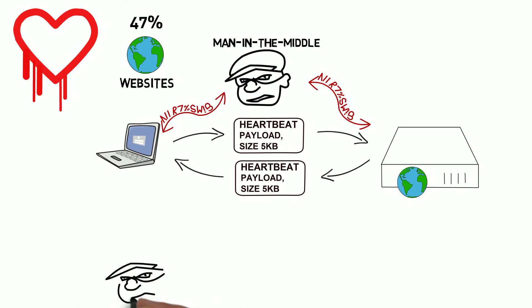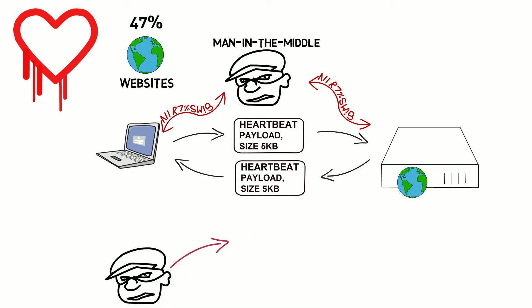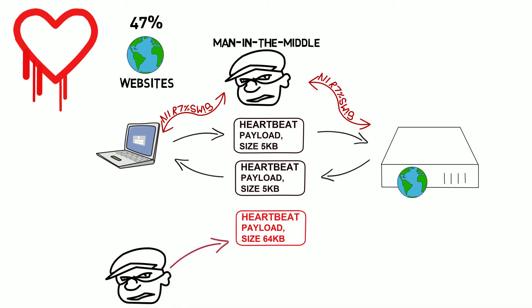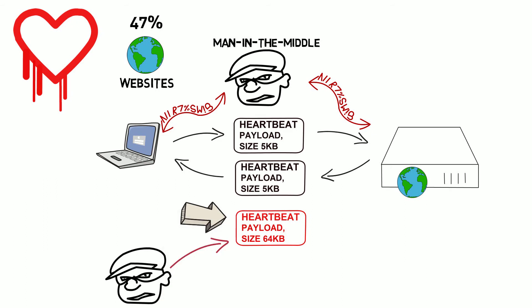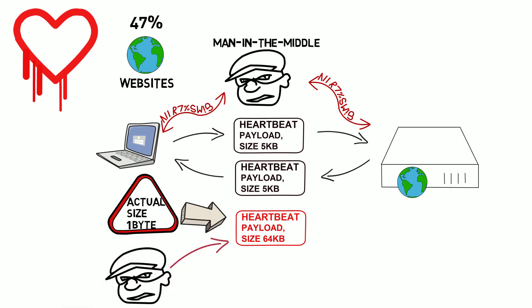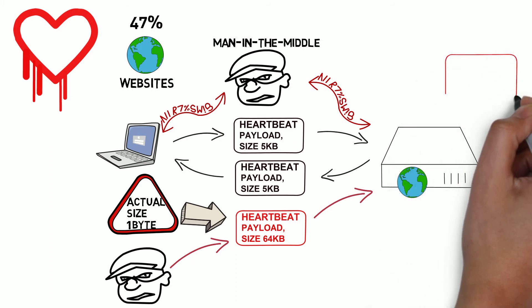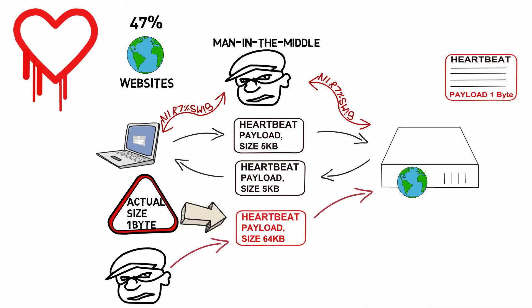The Heartbleed bug consists of the attacker sending a heartbeat request that includes, for example, a 1-byte payload but lists the payload size as being 64 kilobytes. However, when OpenSSL copies the payload into memory, instead of validating that the actual size of the payload received was 1 byte,